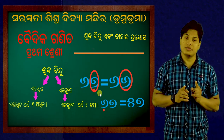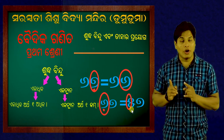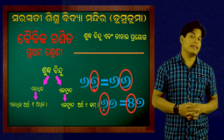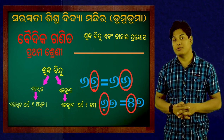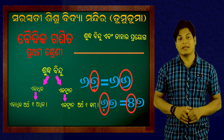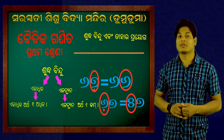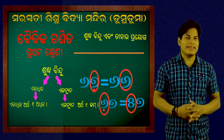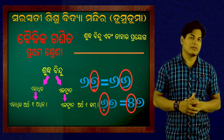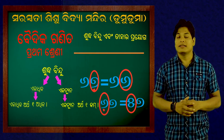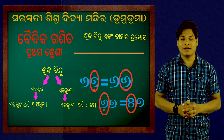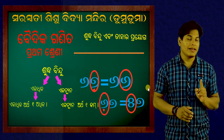We have 7. We have 6. That's about 1. 6 minus 1 is 5. 6 minus 1 is equal to 5. We have 8. We have 7. We will know you all about this. I am going to have a few questions. I will have a few questions.